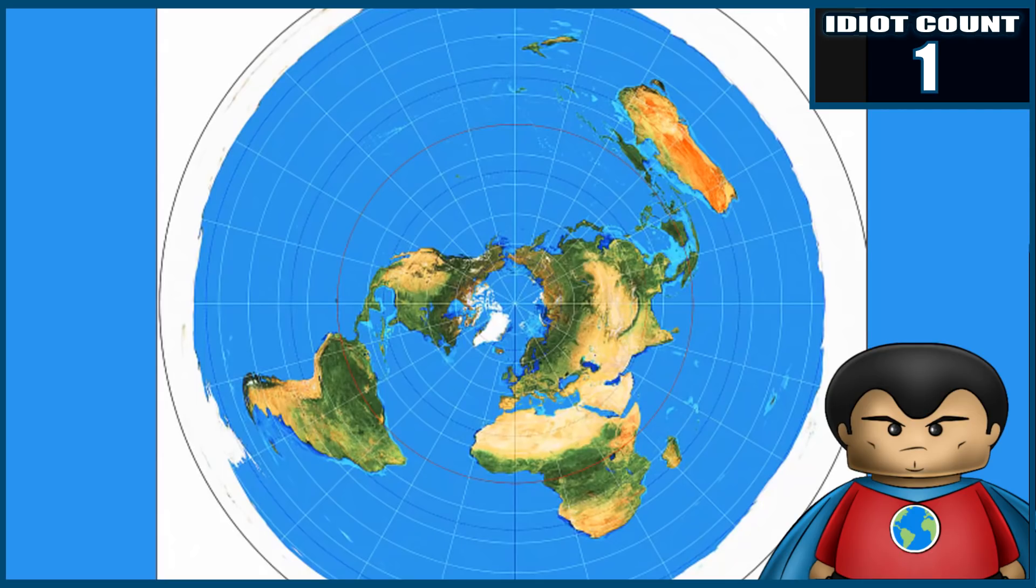So I guess Mr. Thrive and Survive didn't pay attention to geometry in high school. The mathematical definition of the circumference of a circle is pi times the diameter. Which means as you increase the diameter, you proportionally increase the circumference.